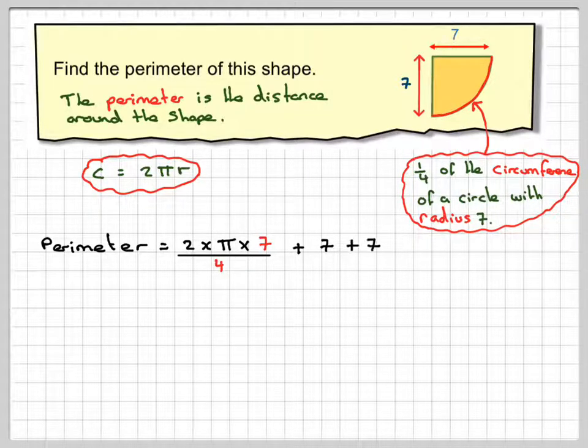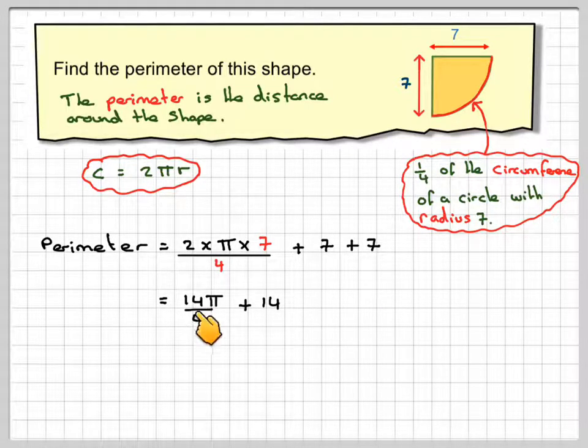Two times seven is 14, so we've got 14π over 4, and 7 plus 7 is 14. 14 divided by 4 can be written as 7π over 2 plus 14.